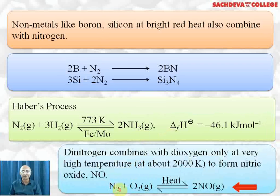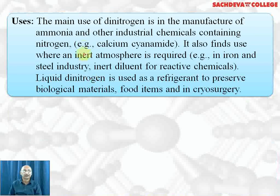Dinitrogen combines with dioxygen only at very high temperature, about 2000 Kelvin, because the high bond dissociation energy required to break the triple bond of nitrogen and the double bond of oxygen results in the formation of nitric oxide, or nitrogen monoxide.